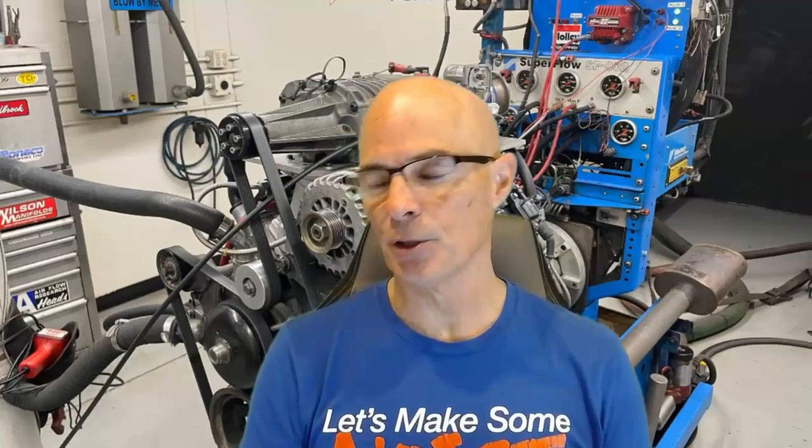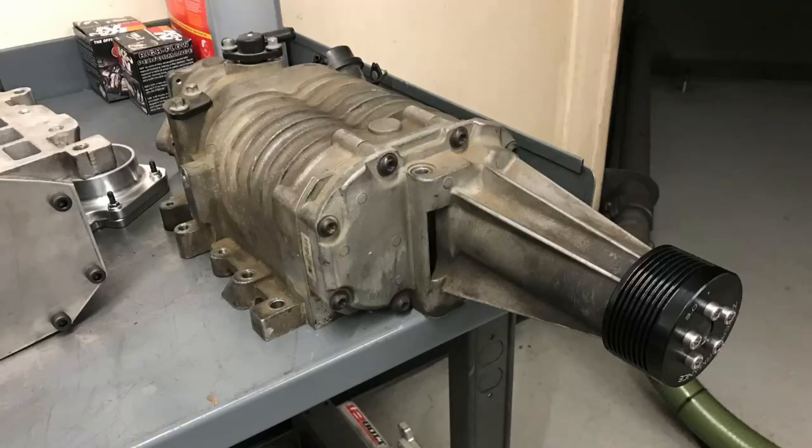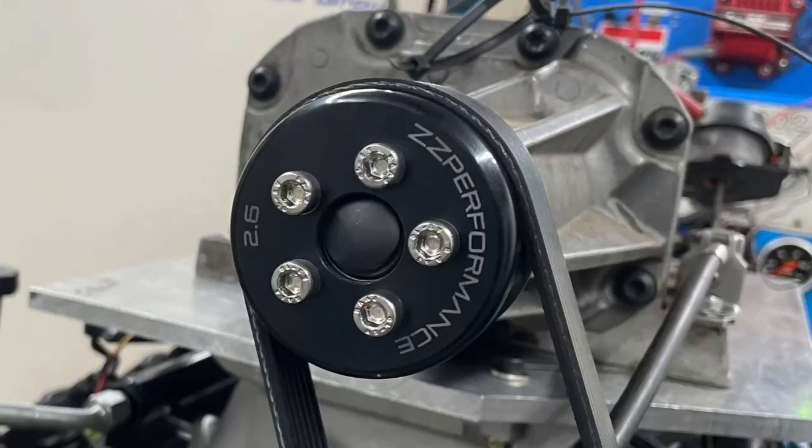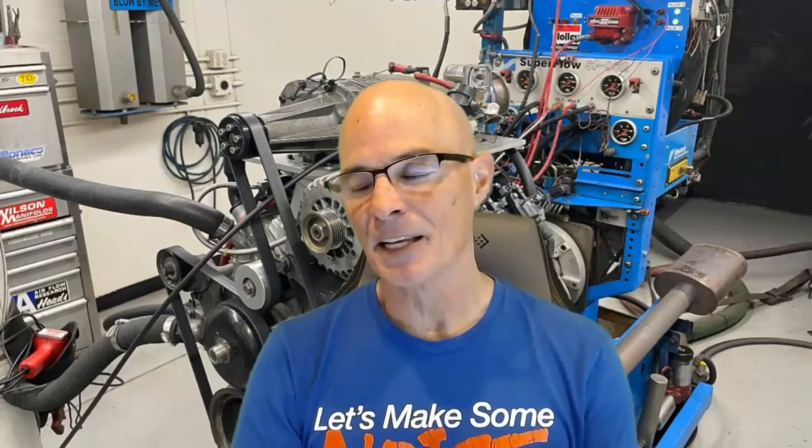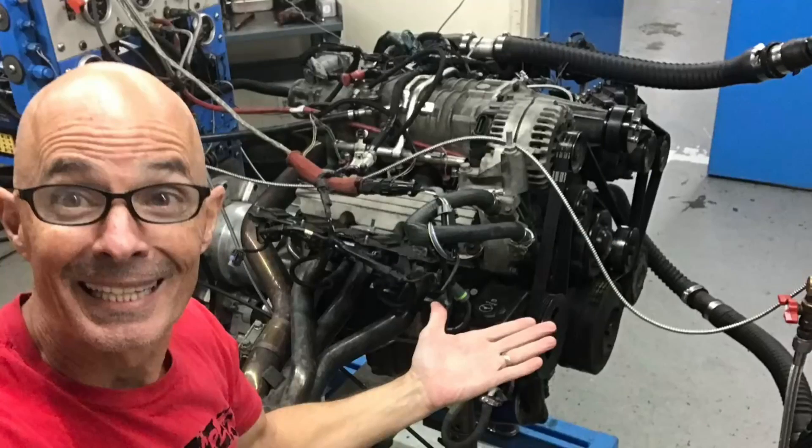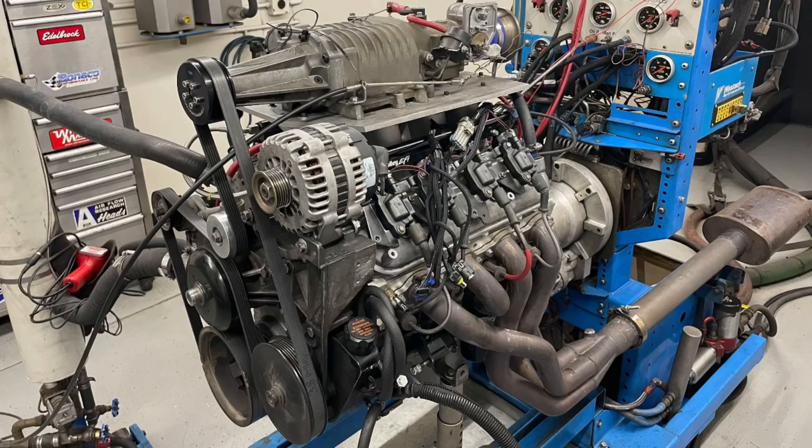Today we're taking a look at a comparison using the M90, a junkyard M90 Gen 5 supercharger with a very small 2.6 inch blower pulley that spins the blower very fast. The cool thing is I ran that setup both on a 3800 V6 and a 4.8 liter V8, so it makes for an interesting comparison.